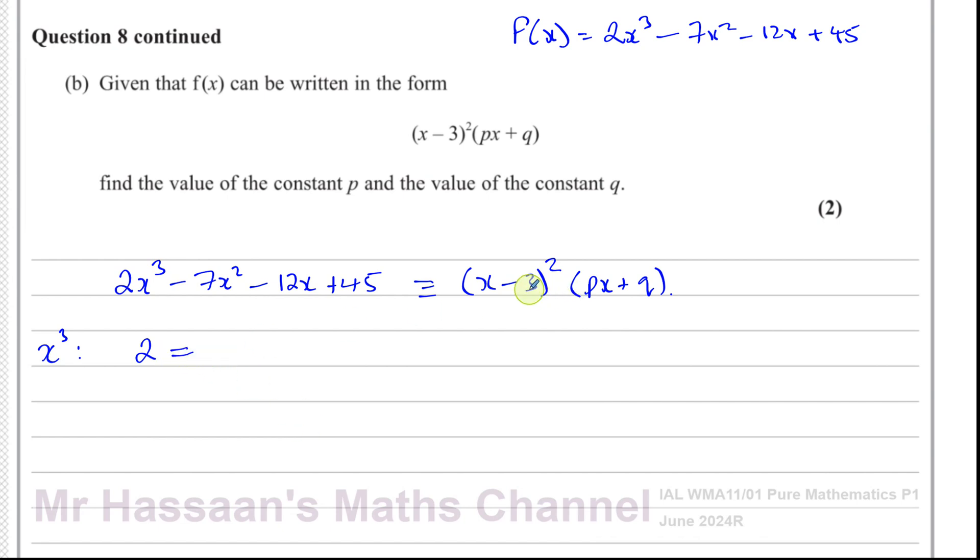On this side we have 2x³. On this side, what will be the x³ term? When you square this bracket, you're going to have x². Then this bracket is going to be multiplied with that bracket, so you're going to have px³. Because if you think about it, this is (x - 3)(x - 3)(px + q). So this times this times this will give you the x³ term, which is basically px³. So p is going to be 2. There will be no other x³ term that will be formed from that.